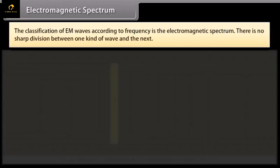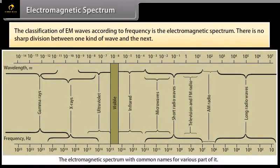Electromagnetic spectrum. The classification of EM waves according to frequency is the electromagnetic spectrum. There is no sharp division between one kind of wave and the next. The classification is based on how the waves are produced or detected. Let us describe these different types of electromagnetic waves in order of decreasing wavelengths.